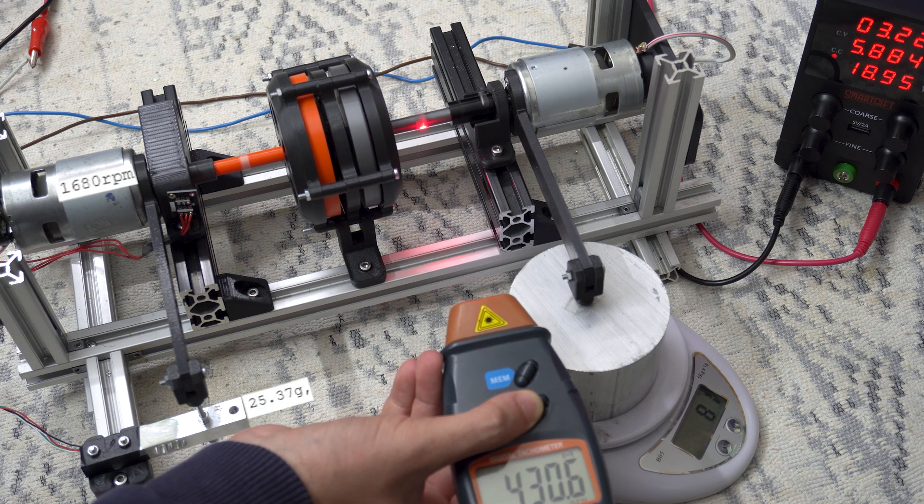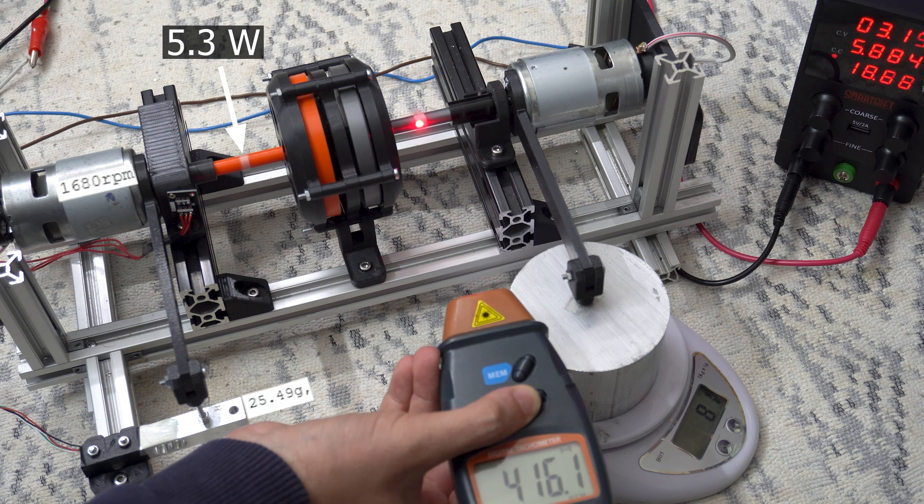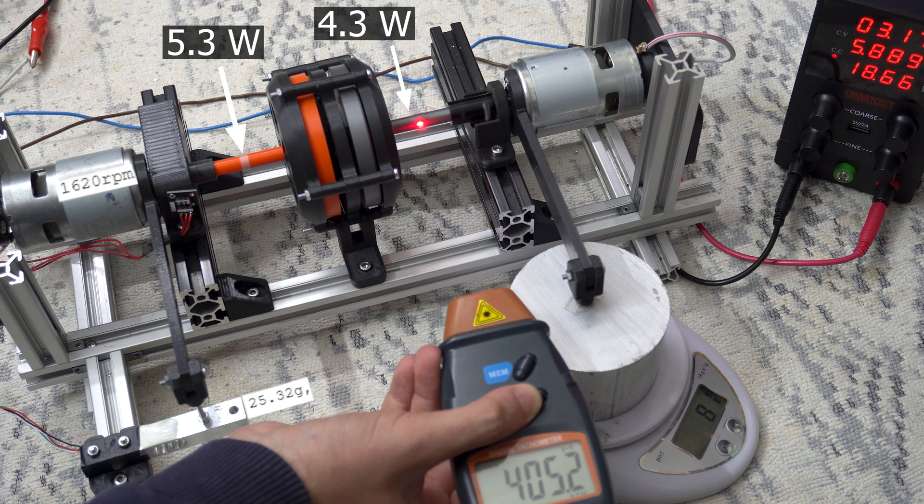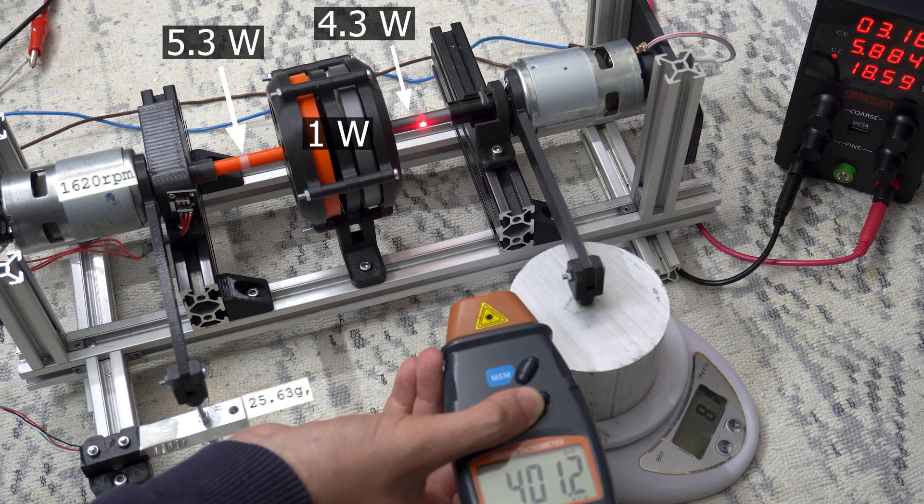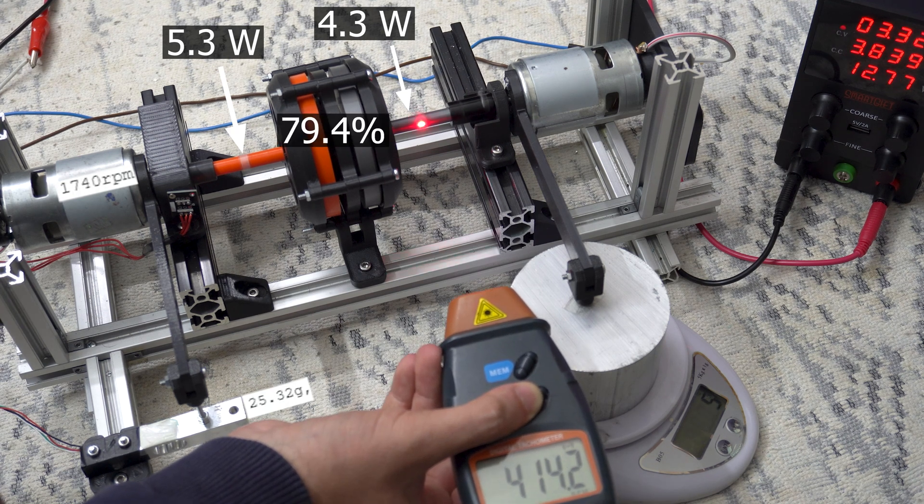So currently, the power on the input shaft is 5.3 watts, and the output is around 4.3 watts. The magnetic gearbox in between caused a power loss of 1 watt, and right now, it's running at around 80% efficiency.